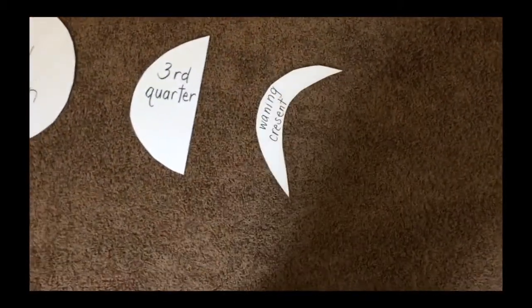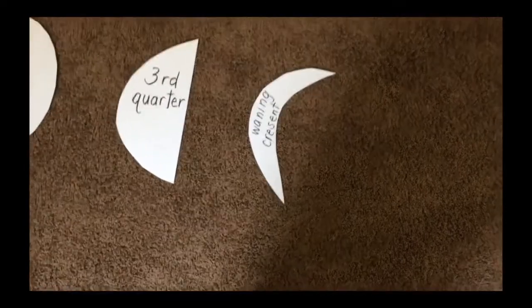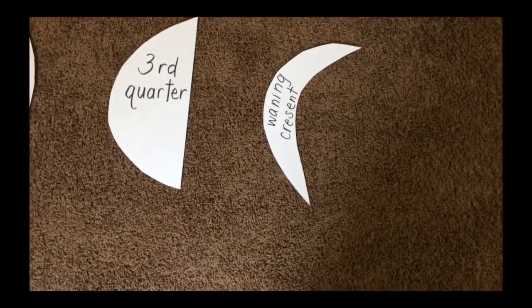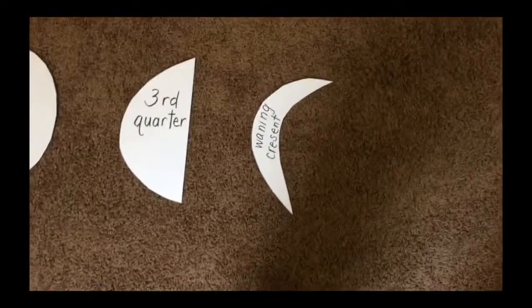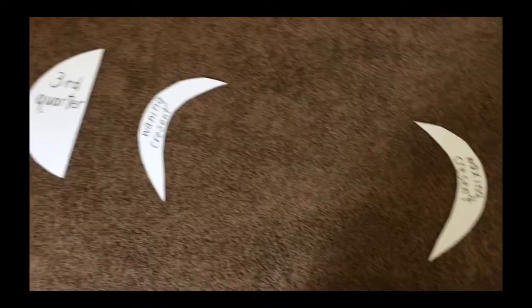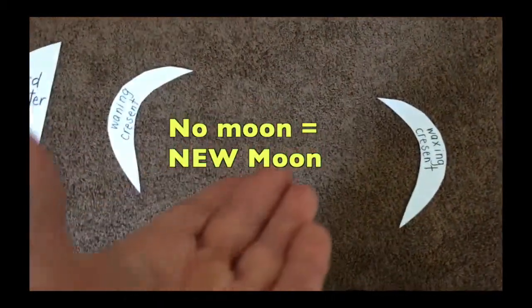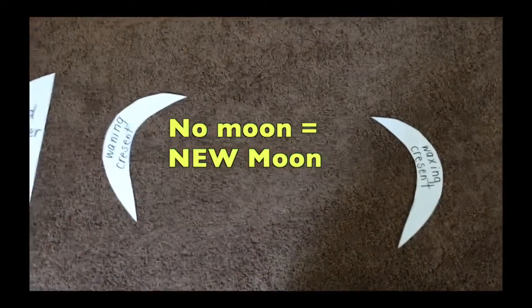Finally, we have the waning crescent. It's like a C and it looks like it's going away even more. That's because the shadow of the earth is in the way because the sun is shining on it. Then we have no moon at all, but it's called the new moon. It's up there. We just can't see it because of the shadow.